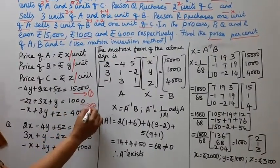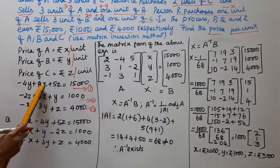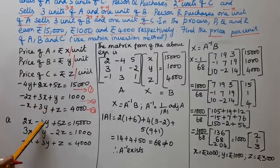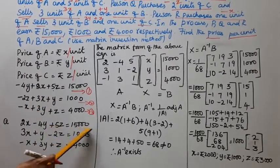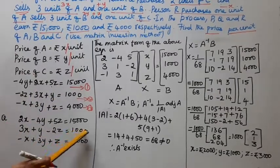This is second equation. This is third. 2X minus 4Y plus 5Z equal to 15,000. 3X plus Y minus 2Z equal to 1000. Minus X plus 3Y plus Z equal to 4000.